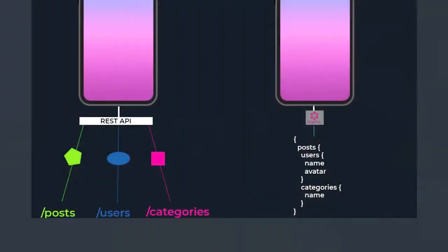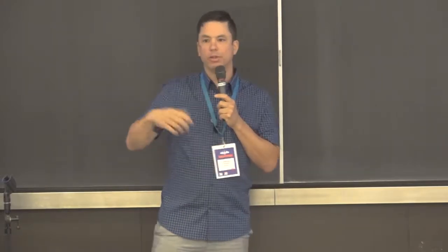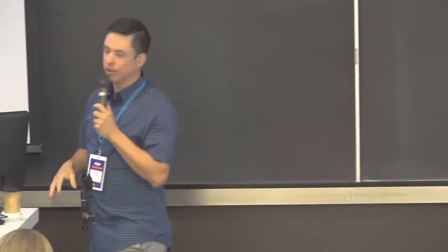For the REST API, you would need to hit the posts endpoint, then the user endpoint, then the category endpoint. But with GraphQL, you just make one query — you ask for the post, ask for your author, ask for the author's name, ask for the category name — and with just that query it returns exactly that data. That saves a lot of data.